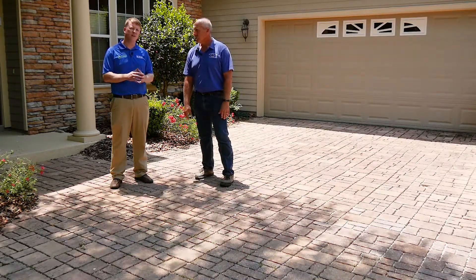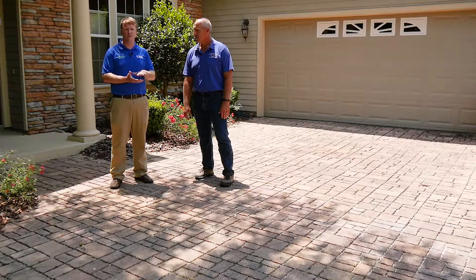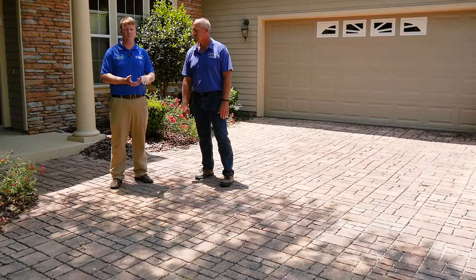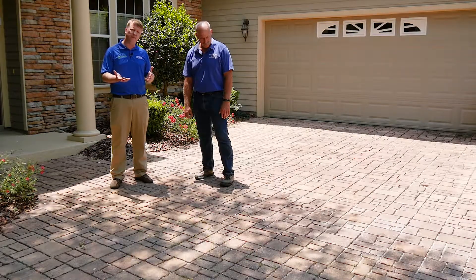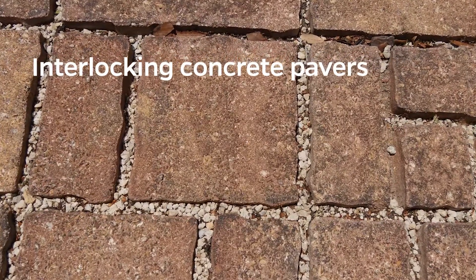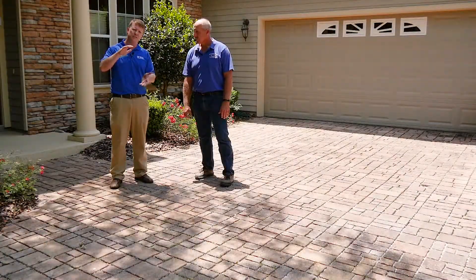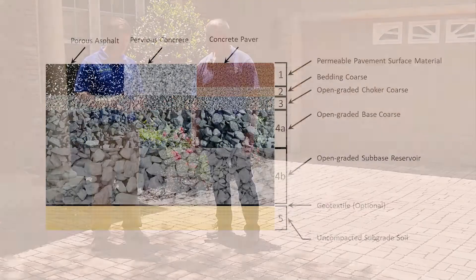Permeable pavements, as they're commonly known, allow water that hits, lands on, or runs onto them to infiltrate through the subsurface and typically infiltrate into the ground below. The profile here typically has a paver — in this case, interlocking concrete pavers — and then below that, maybe 8, 12, or 15 inches of stone that allows water to quickly infiltrate through the pavers into that stone, be stored, and then slowly soak into the subsurface. This acts basically like a filter that allows water to infiltrate very rapidly through the pavement surface and reduce runoff.